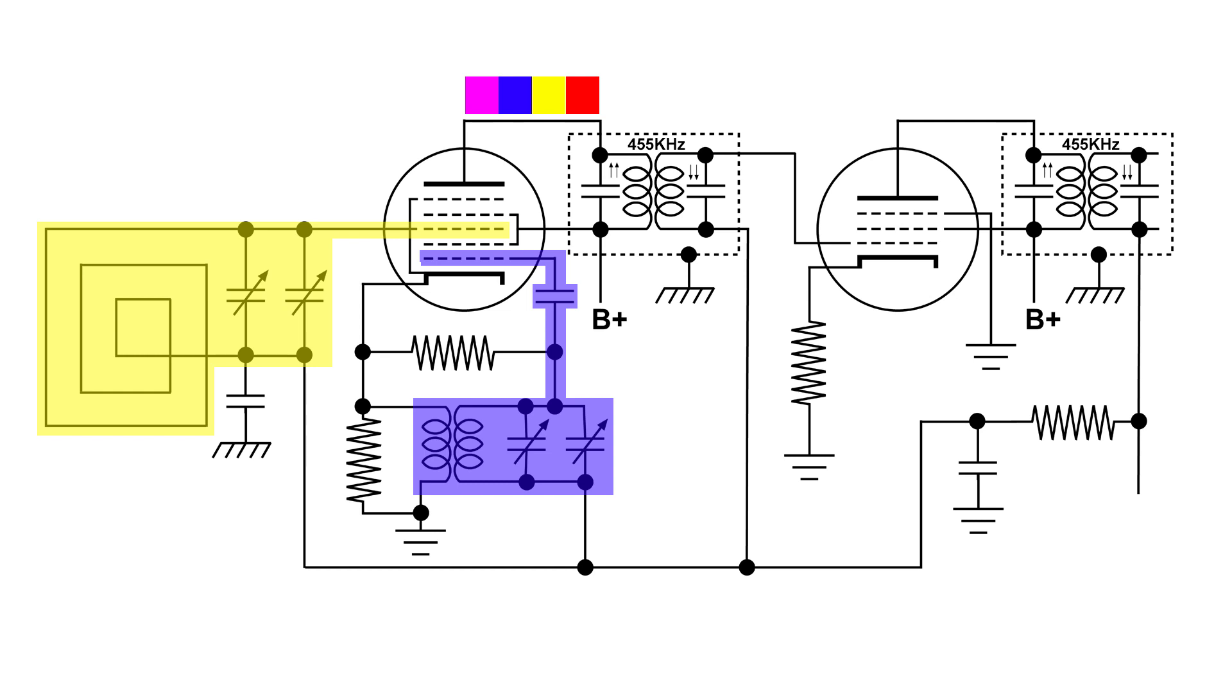Now these IF cans are very highly tuned LC circuits, tank circuits tuned to 455 kilohertz. And when that signal runs through the first IF can we get something like this: we get almost totally 455 kilohertz plus just a little bit more, just a little of the other frequencies.